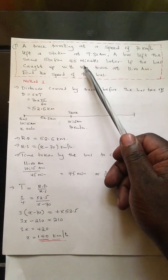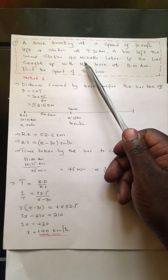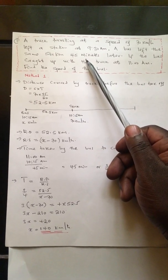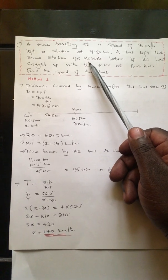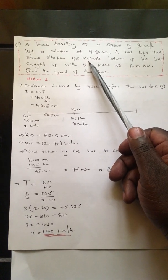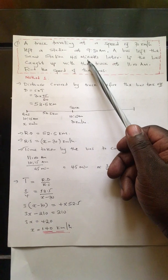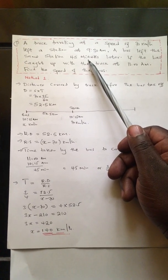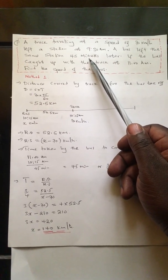Something unusual about this question is that, unlike all the previous examples, in this case you don't have the speed of one of the bodies, but you have the time that they met. So how do you approach such a question?